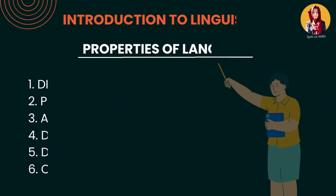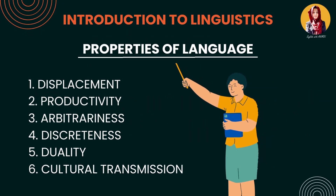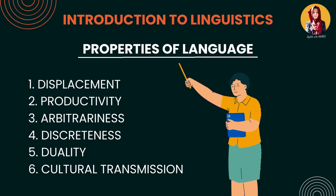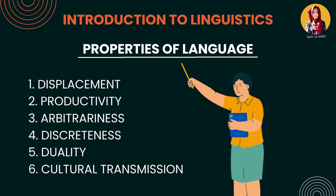Let's start. We are going to discuss the properties of language — language ke andar kaun si khususiyaat hain jo language ko language banaati hain. Here we have six different properties of language: Number 1, Displacement; Number 2, Productivity; Number 3, Arbitrariness; Number 4, Discreteness; Number 5, Duality; Number 6, Cultural Transmission. Now we will discuss them one by one.